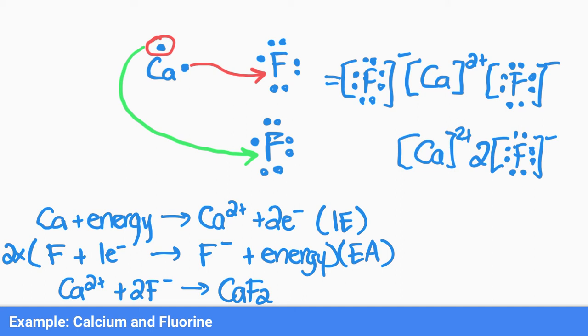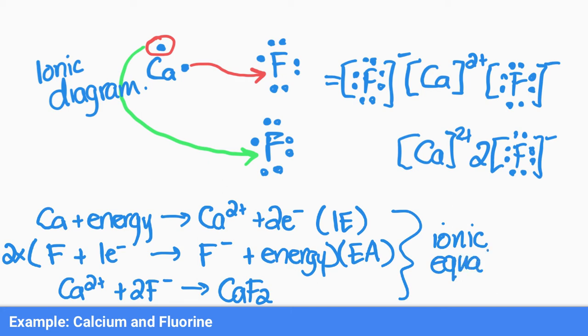What we showed at the top here, this is called an ionic diagram. What we showed down here at the bottom, these are called ionic equations. So that's two ways that we can represent the formation of an ionic bond. That's it for this video. Let's move on to our next task.